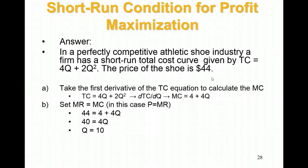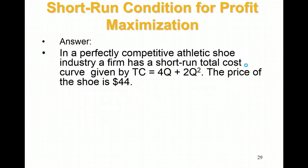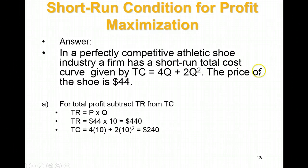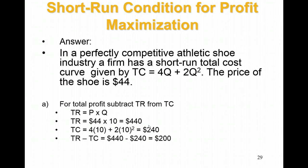Now you can figure out total revenue, which is P times Q, and total cost by plugging Q back into the total cost equation. Total revenue equals 44 times 10, which is $440. Plugging Q equals 10 into the total cost equation gives $240. Subtracting total cost from total revenue, we get a profit of $200. That's how you solve a perfect competition problem mathematically. The next video will be about monopoly.